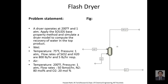Welcome to the Aspen Plus simulation of a flash dryer. Today's problem statement: a dryer operates at 200 degree Fahrenheit and 1 atmosphere. We apply the solids-based property method and simulate a dryer model to compute the recovery of water in the top product. The wet feed is at 75 degree Fahrenheit, 1 atmosphere, with silicon dioxide at 800 pounds per hour and H2O at 5 pounds per hour. The air feed is at 200 degree Fahrenheit, 1 atmosphere, 50 pound moles per hour, with 80 mole percent nitrogen and 20 mole percent oxygen.